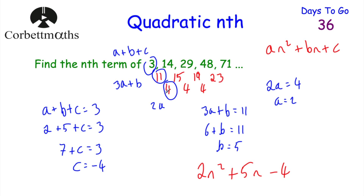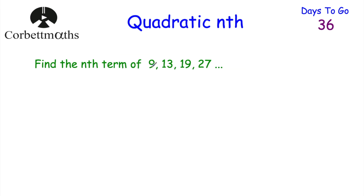To summarise the method: write down the first differences, then the second differences. The second difference equals 2a, the first first difference equals 3a + b, and the first term equals a + b + c. Then you can find the values for a, b, and c. Now let's have a look at the next question — we've got the sequence 9, 13, 19, 27. Press pause now and find the nth term of this quadratic sequence.